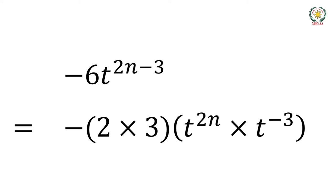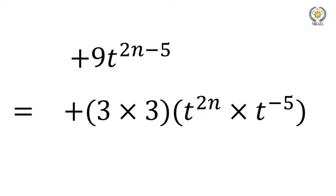We can rewrite this as: 3t to the power 2n, minus 2 times 3 times t to the power 2n times t to the power minus 3, plus 3 times 3 times t to the power 2n times t to the power minus 5.